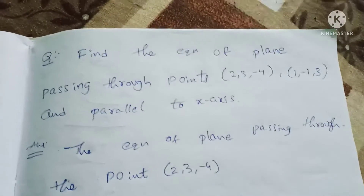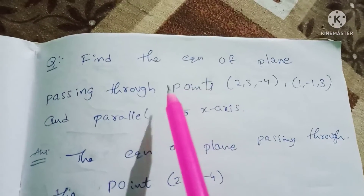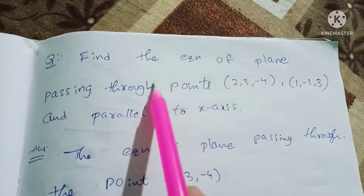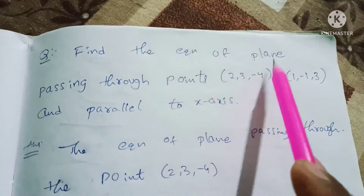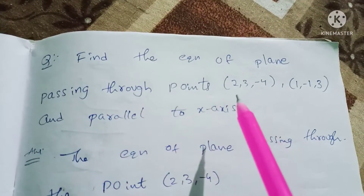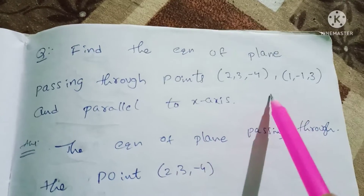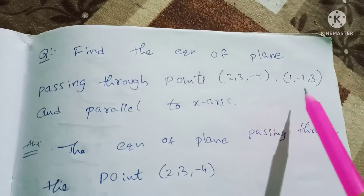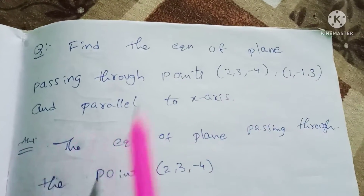In the plane chapter, this is my question: Find the equation of the plane passing through the points (2, 3, -4), (1, -1, 3), and parallel to the x-axis.